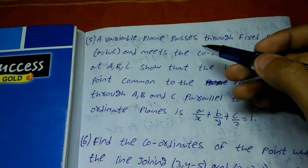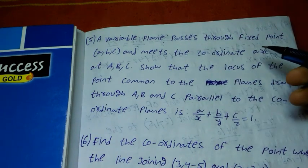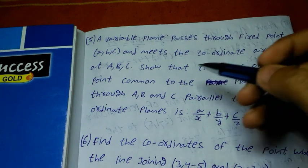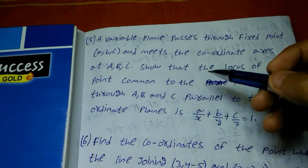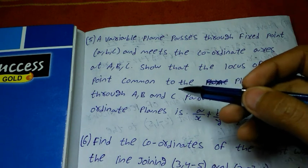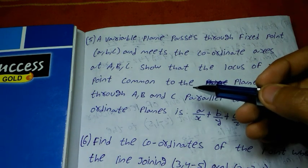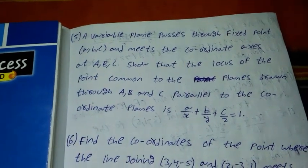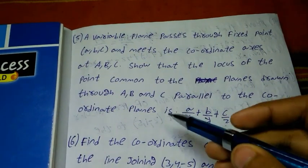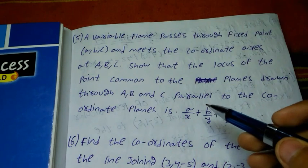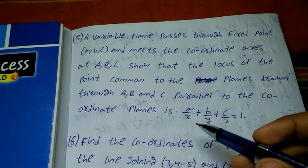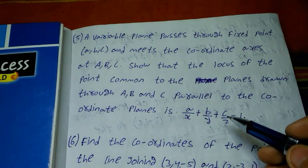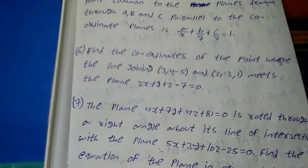Number 5 question: a variable plane passes through the fixed point (a, b, c) and meets the coordinate axes at A, B, C. Show that the locus of the point of intersection of the planes drawn through A, B, and C parallel to the coordinate planes is a/x plus b/y plus c/z equal to 1.